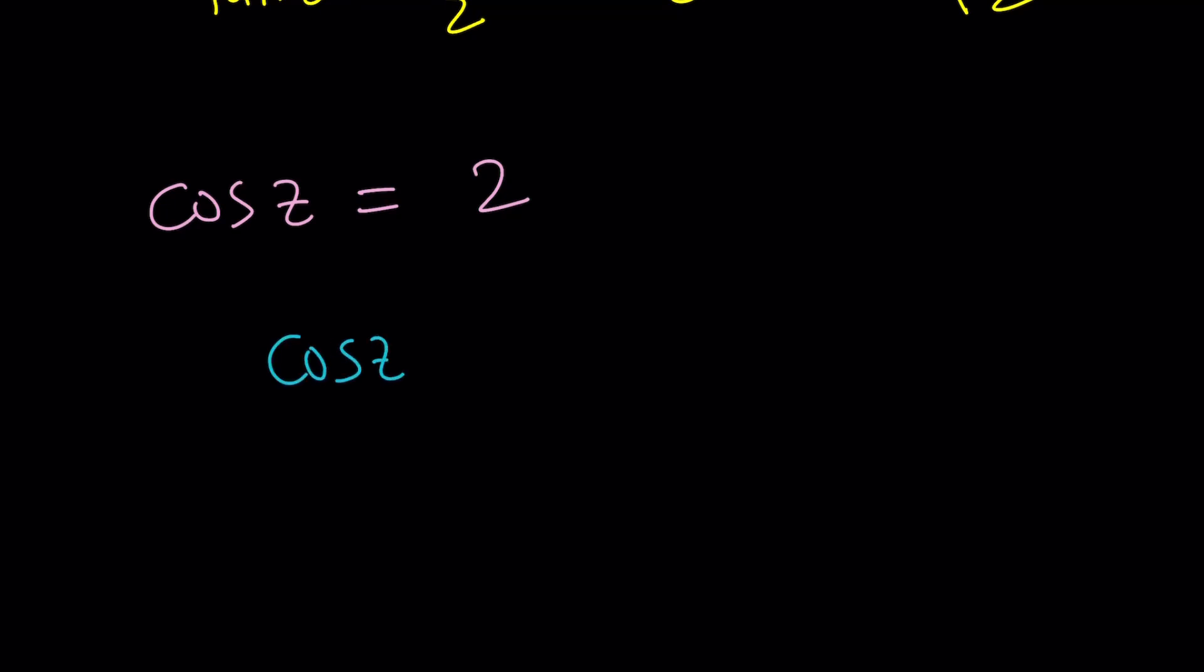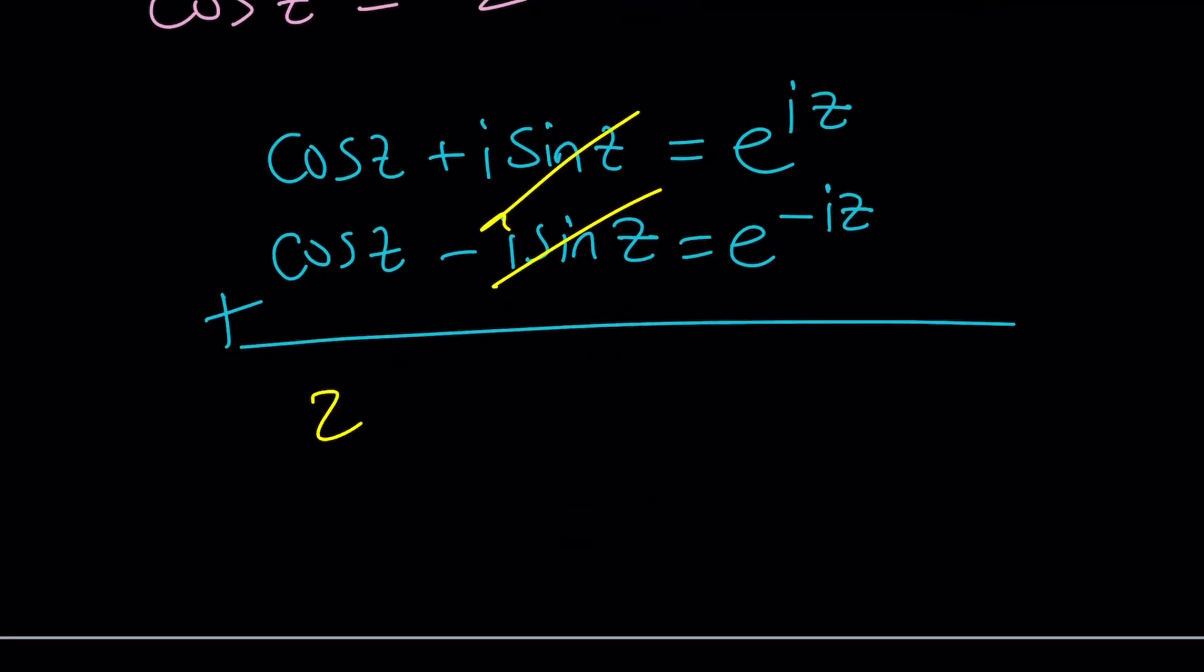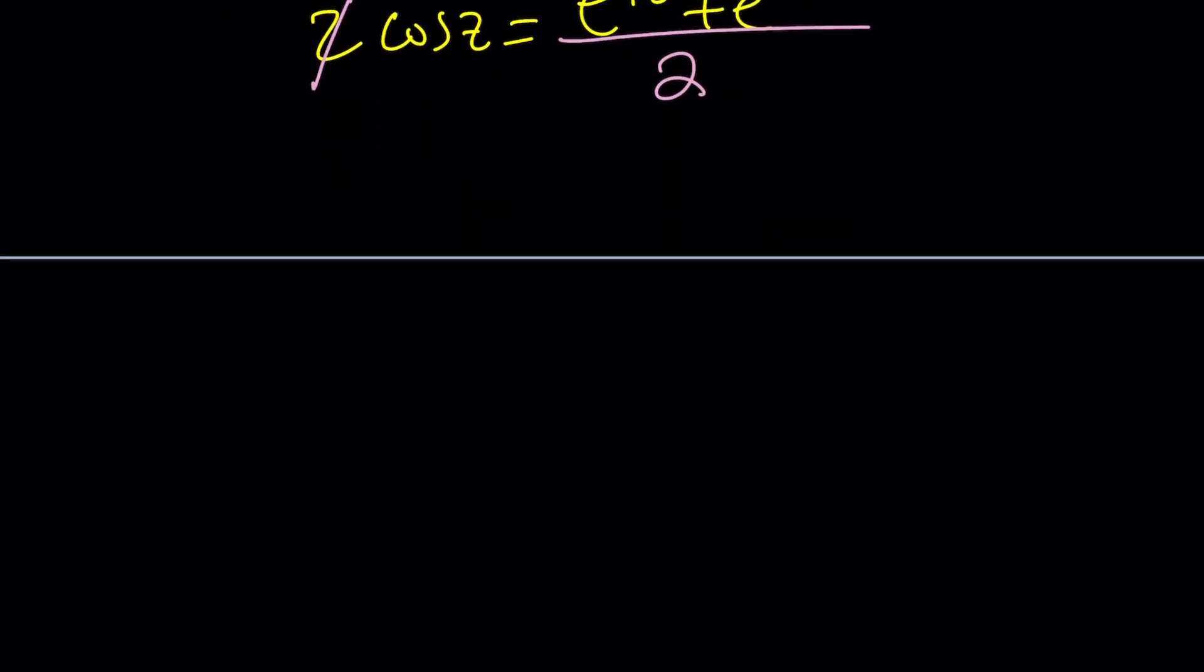And Euler's formula works like this. Cosine of z plus i sine z is equal to e to the power iz. And then cosine of z minus i sine z, now I replace z with negative z. That should give me e to the power negative iz. And if you go ahead and add these two equations, from here we get two cosine z equals e to the iz plus e to the negative iz. And if you go ahead and divide both sides by two, then you get the cosine z. So this is a really powerful formula.